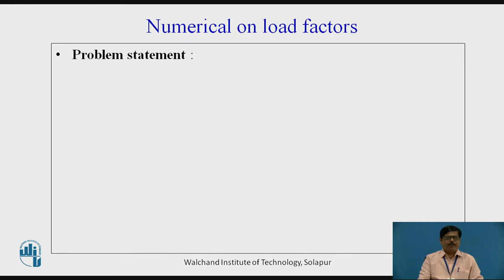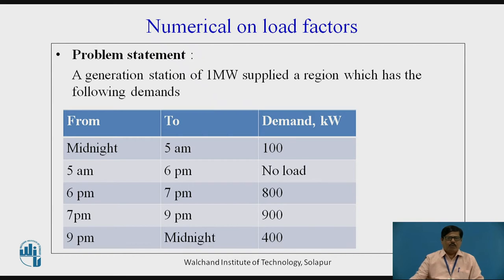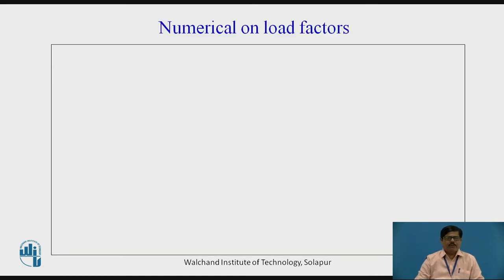Now let us see the problem statement. A generation station of 1 MW supplies a region which has the following demand. The installed capacity of the generation station is 1 MW. The demand for the particular region is as follows: from midnight to 5 AM, the demand is 100 KW; from 5 AM to 6 PM, there is no load; from 6 PM to 7 PM, the demand is 800 KW; from 7 PM to 9 PM, it is 900 KW; and from 9 PM to midnight, it is 400 KW.